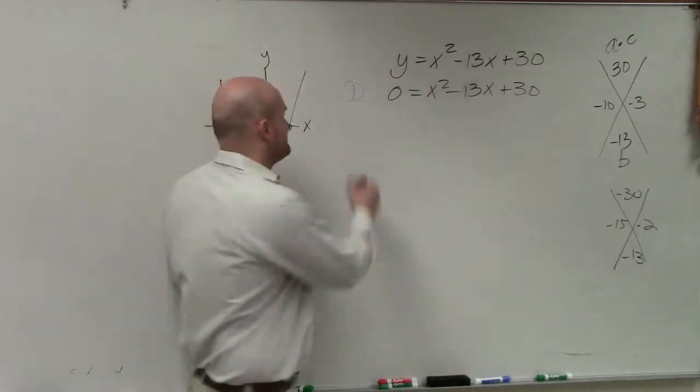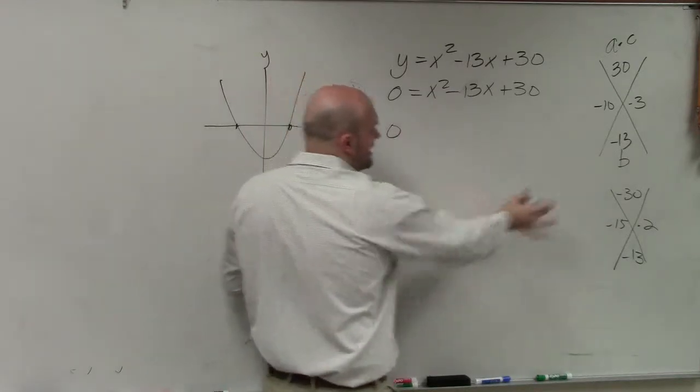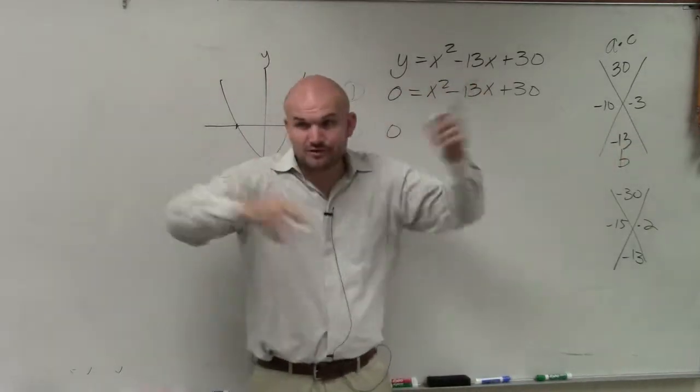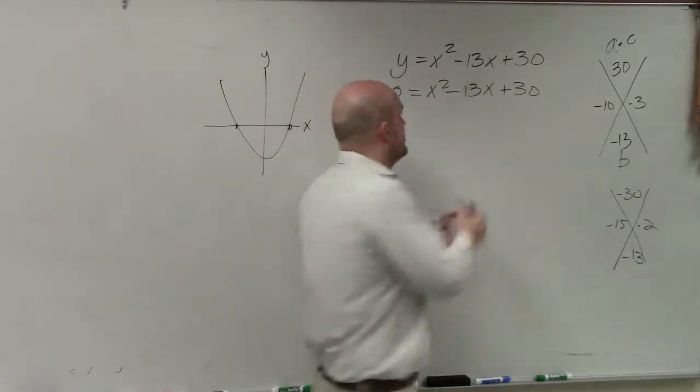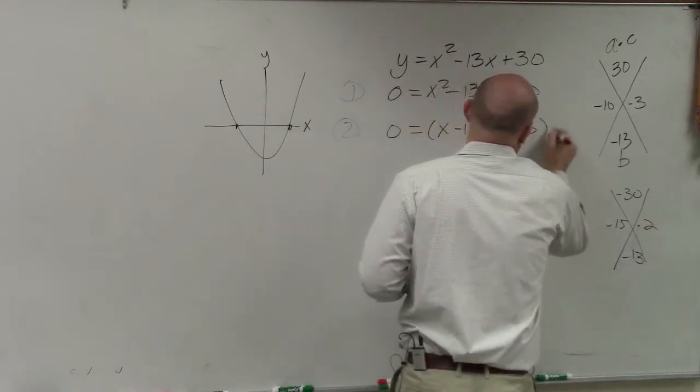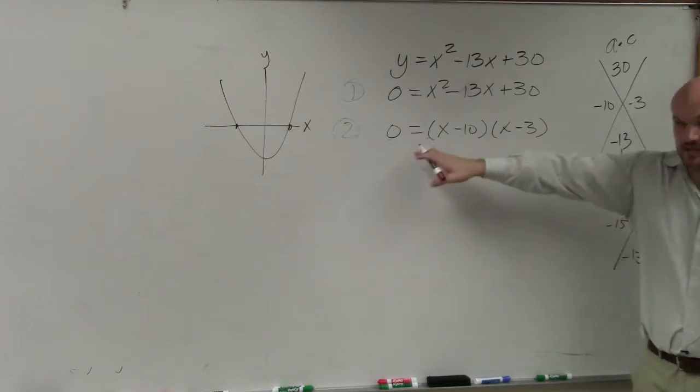So now, that was step 1. Step 2 was to factor them. You rewrite it as a product of factors. Since A is equal to 1, I don't have to use that box thing that we did. I can just write them now as my factors. So I can write this as x minus 10 times x minus 3. Does everybody follow me with that? Equal to 0. Equal to 0. It's always equal to 0.